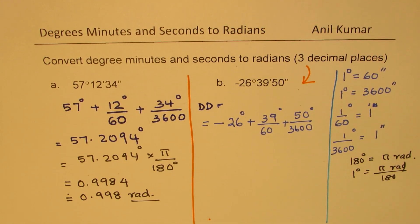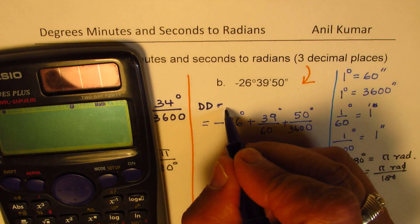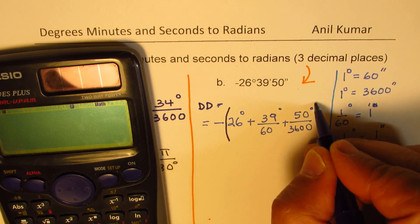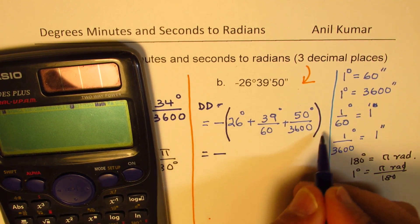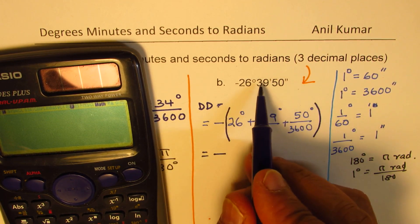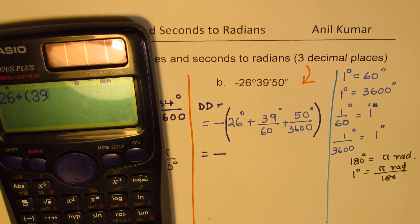So let's do it and calculate. Minus, actually speaking, is outside the bracket. The whole angle will remain negative. And we'll do this calculation to write this answer in decimals. So we have 26 plus within brackets, let me write 39 divided by 60,